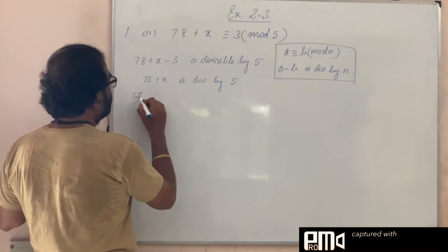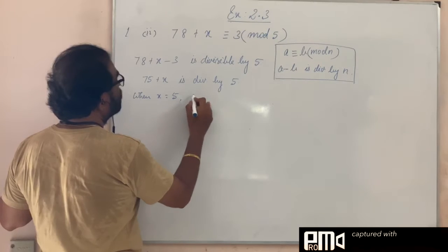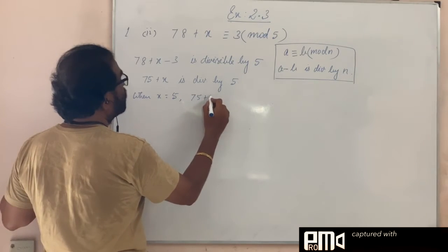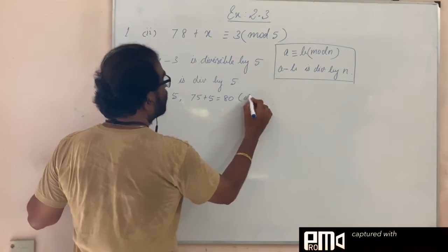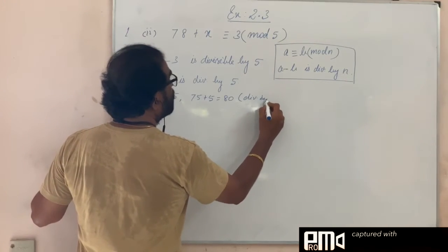So here we write when x is equal to 5, 75 + 5 = 80, and 80 is divisible by 5.